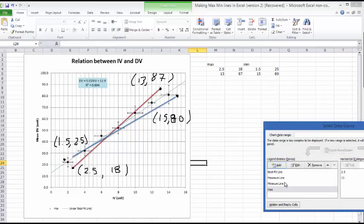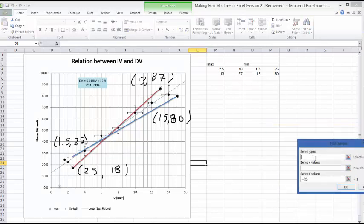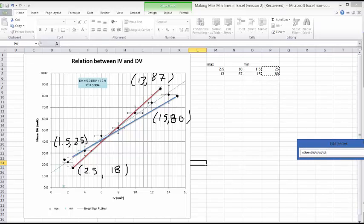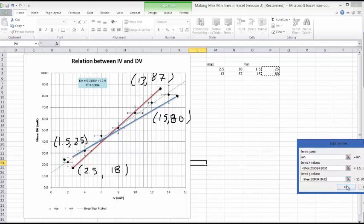We're going to add now the minimum line. So I'm going to add min. My x values are located right here. And my y values are located right here. And I can click on OK.